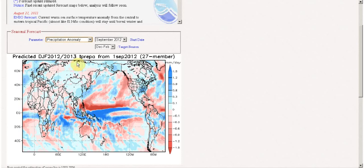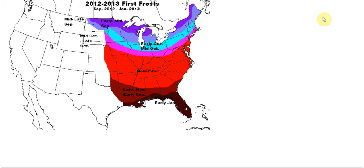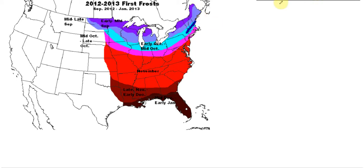I wanted to show you this because this is the most recent model update — it actually came out today, though it takes 20 days to update itself. This is my first frost forecast, which I made a couple weeks ago. I'm actually pretty happy because these regions have already seen their first frost. These regions are actually all under frost advisories today, or freeze warnings.